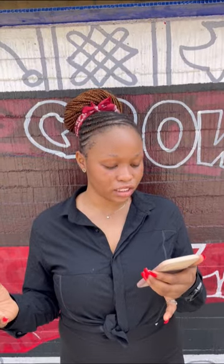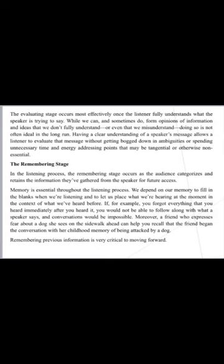When it comes to the evaluation stage, it depends on the person — we evaluate information based on our own thought processes and how we think. After the evaluation stage, we go to the remembering stage. The remembering stage occurs as the audience categorizes and retains information from the speaker for future access. For example, in a class, a lecturer teaches you something; after the class, if you have a test and didn't read that particular part, if you listened attentively, you can try to remember what was said. Remembering previous information is very critical to moving forward.